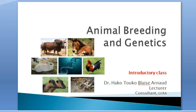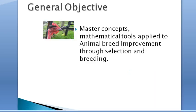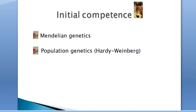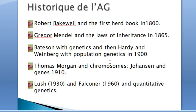Good morning, fellow students. I'm going to introduce today our course on animal breeding and genetics. The general objective of this course is to master concepts and mathematical tools applied to animal breeding improvement through selection and breeding. To comfortably follow this course, we need some prerequisites in Mendelian genetics and in population genetics.